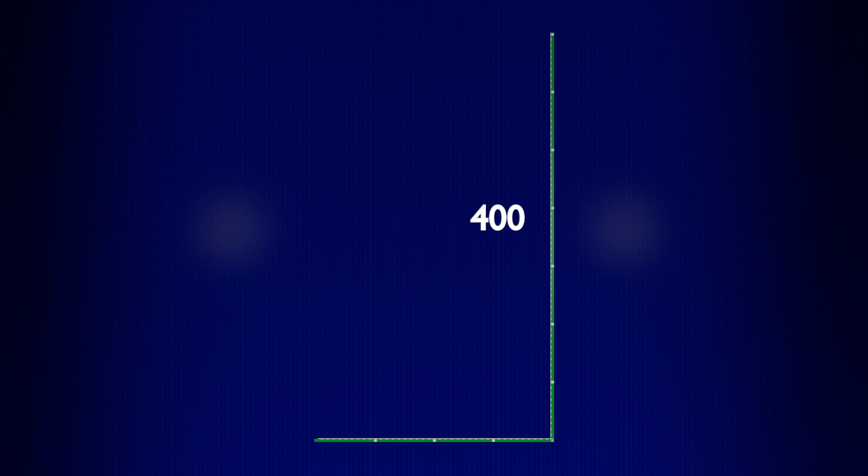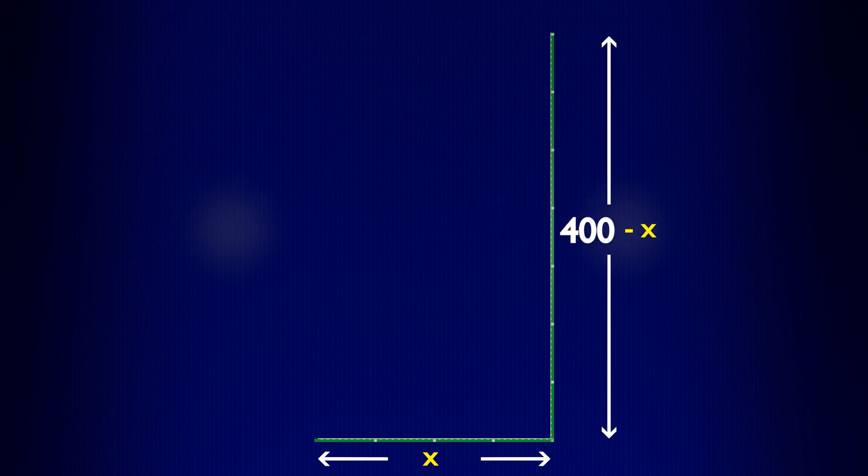If one side is labeled with the variable x, then the other side must be 400 minus x. Half of the total amount of fence minus whatever is used for x. Now we can express the area of the field as a function of one of its dimensions. Area equals length times width.